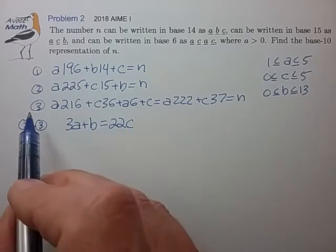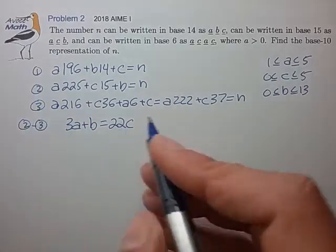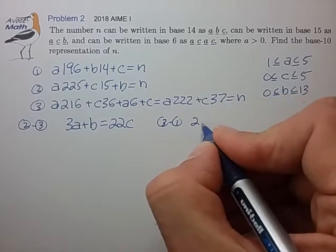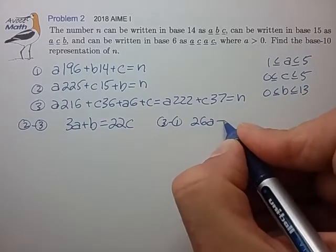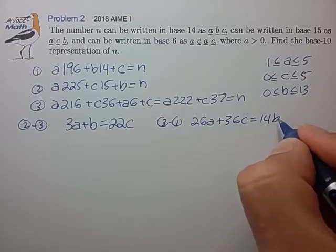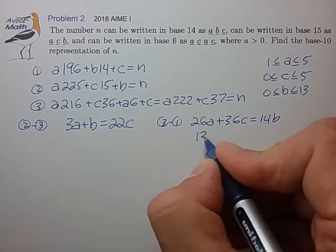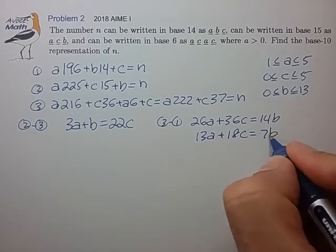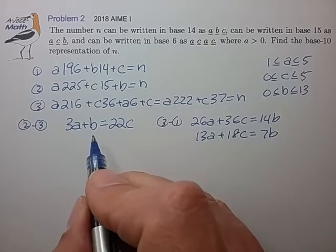Let's find one more. If we take equation 3 minus equation 1, that gives us 26a plus 36c minus 14b divided by 2. That's fairly small, not as good as the first one though.